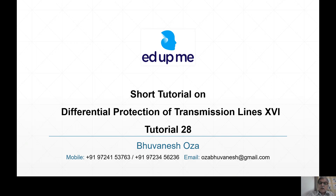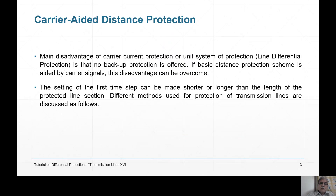In the first Line Differential Protection — the directional comparison scheme we have seen — there was no backup. Here, backup is provided and therefore we will be using basic distance protection. The main disadvantage of carrier current protection as a unit system is there is no backup protection. So if we use a distance protection scheme as a base but aid it by carrier signals, this disadvantage can be overcome.